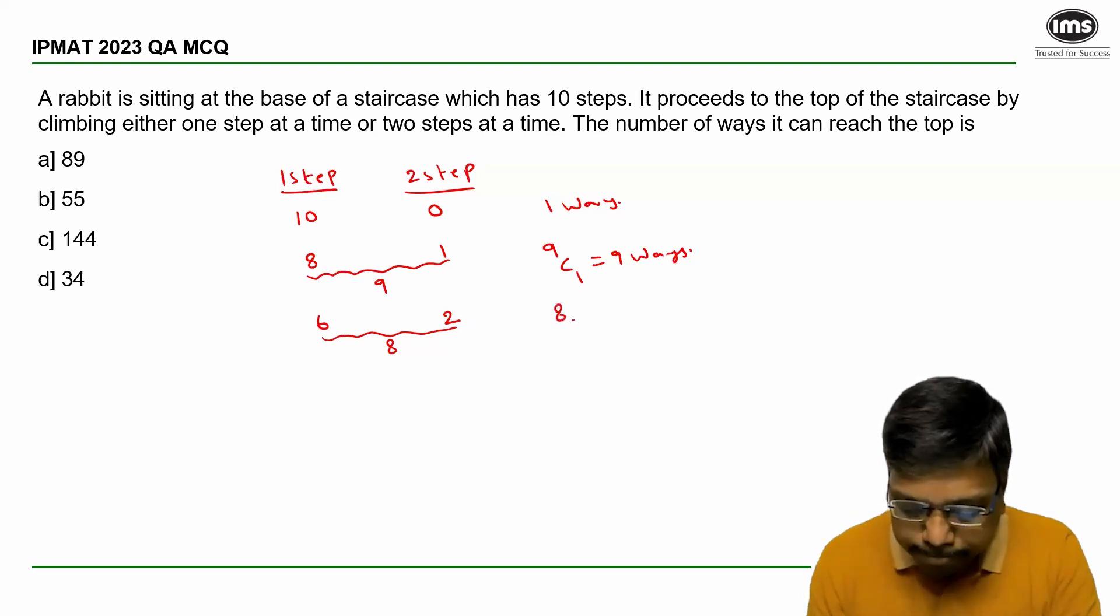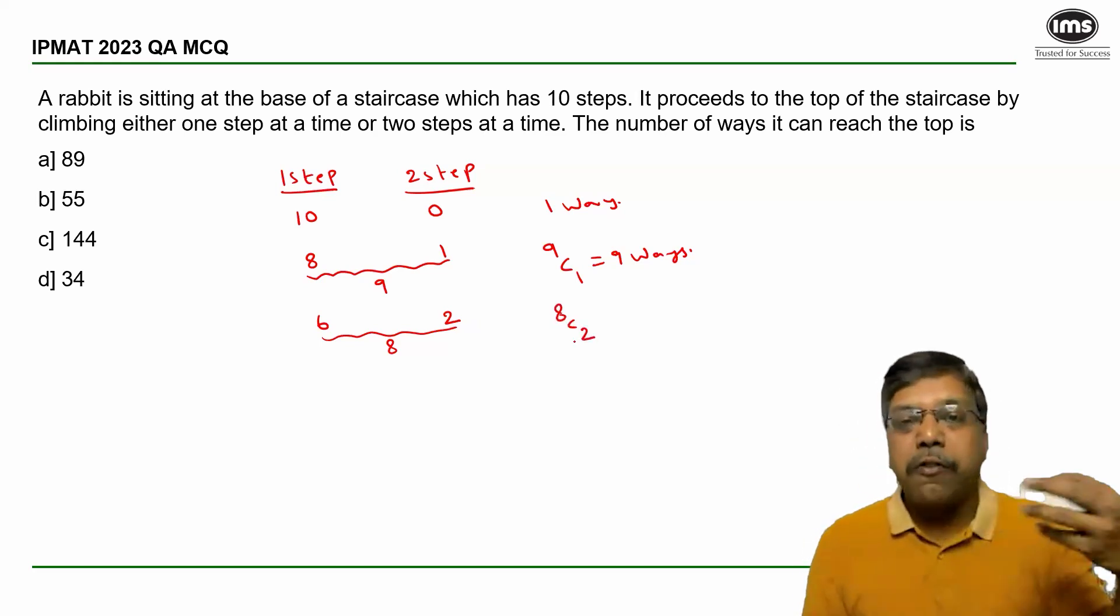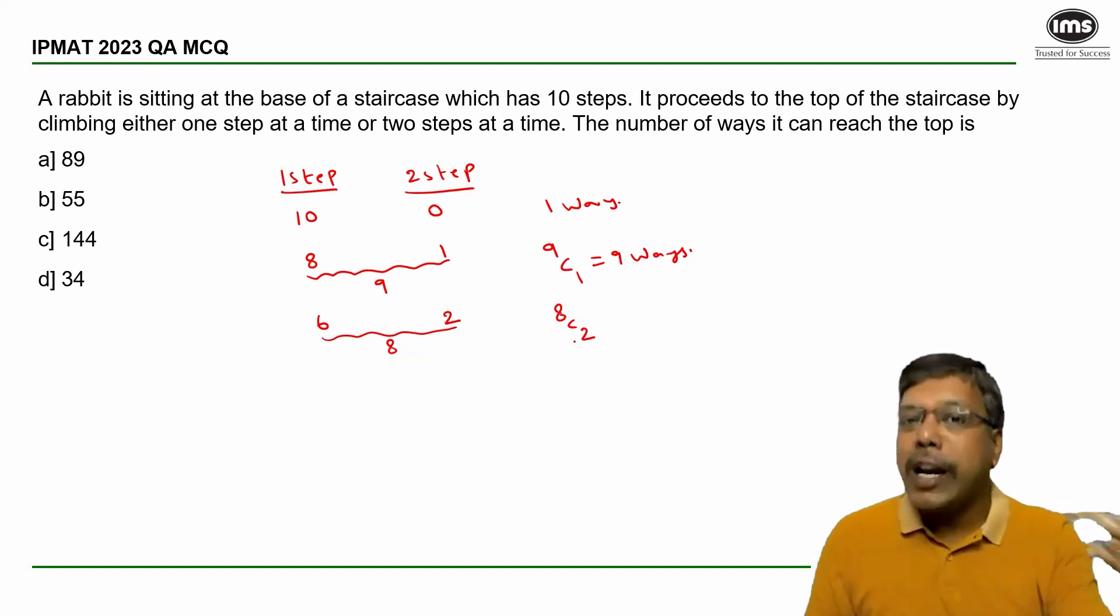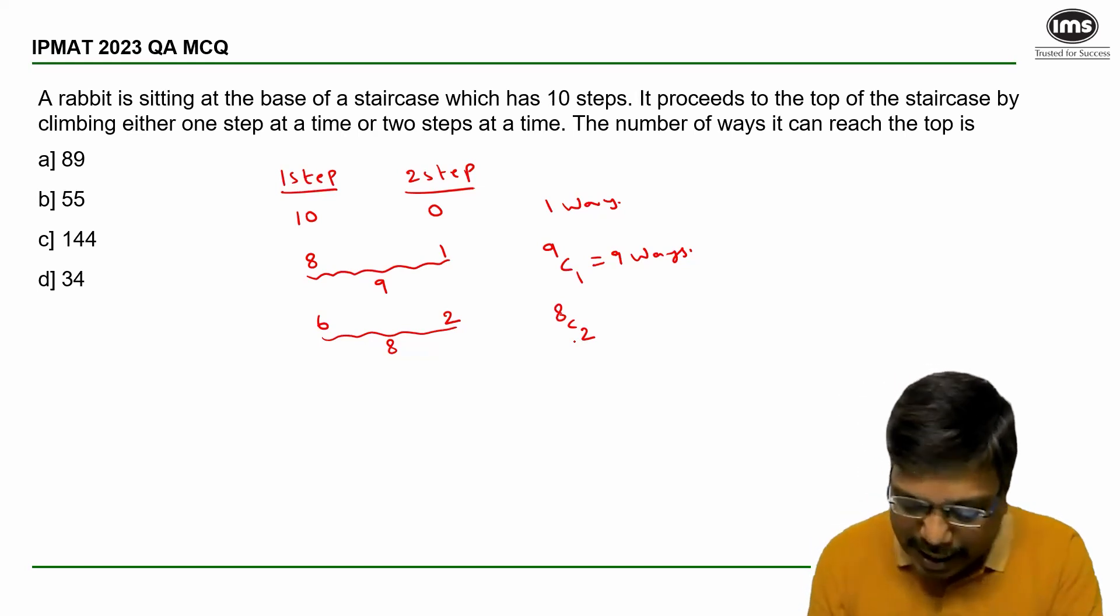So I can select two jumps from eight in 8C2 ways, and those two are double steps. The remaining are single steps. Now 8C2 is 8 times 7 divided by 2, which is 28 ways.